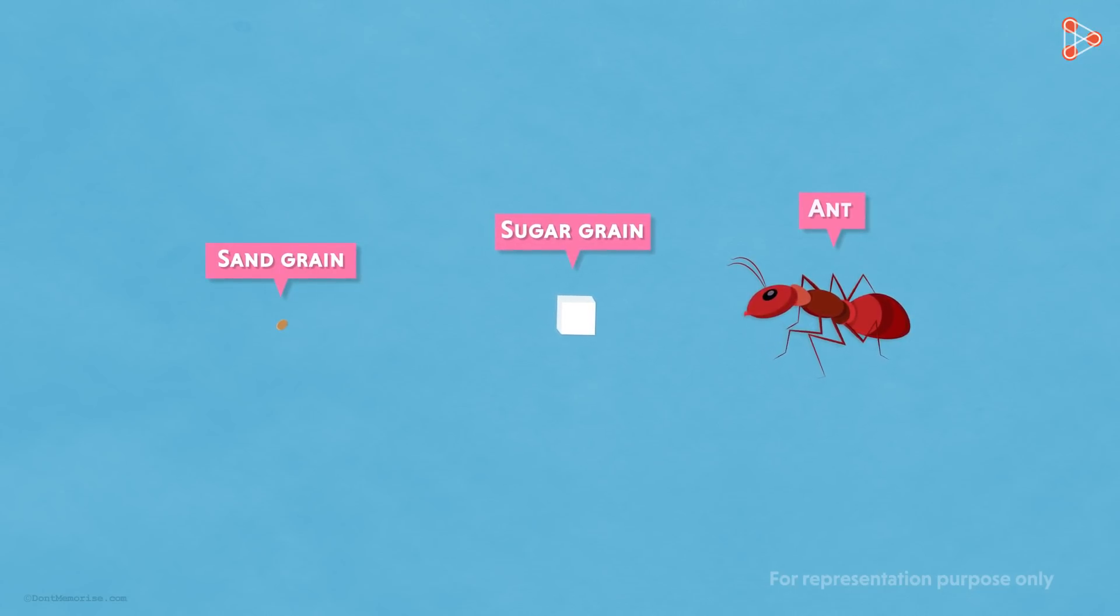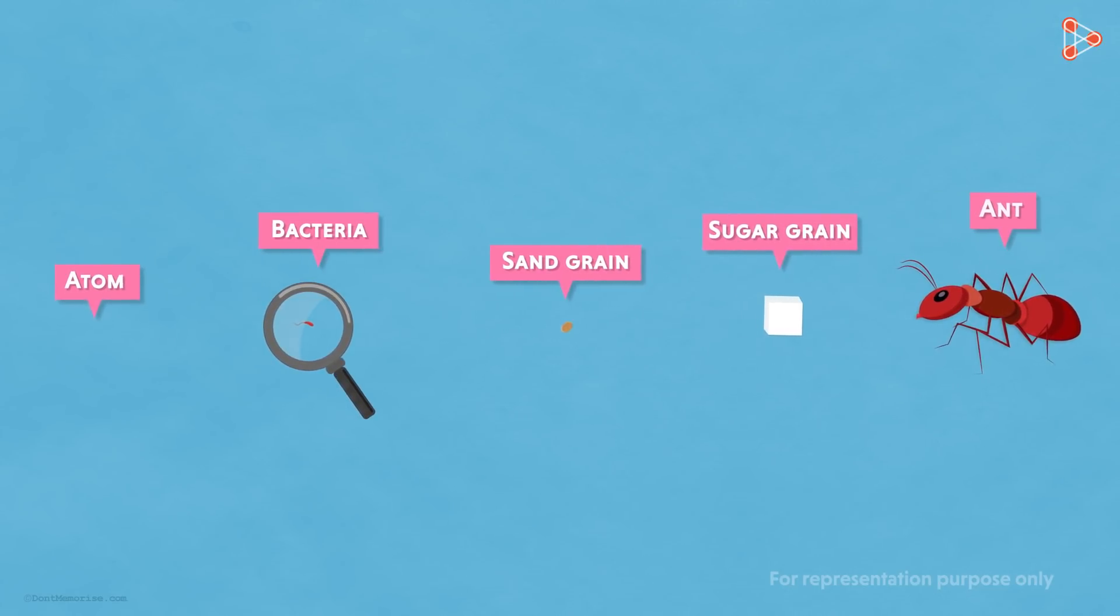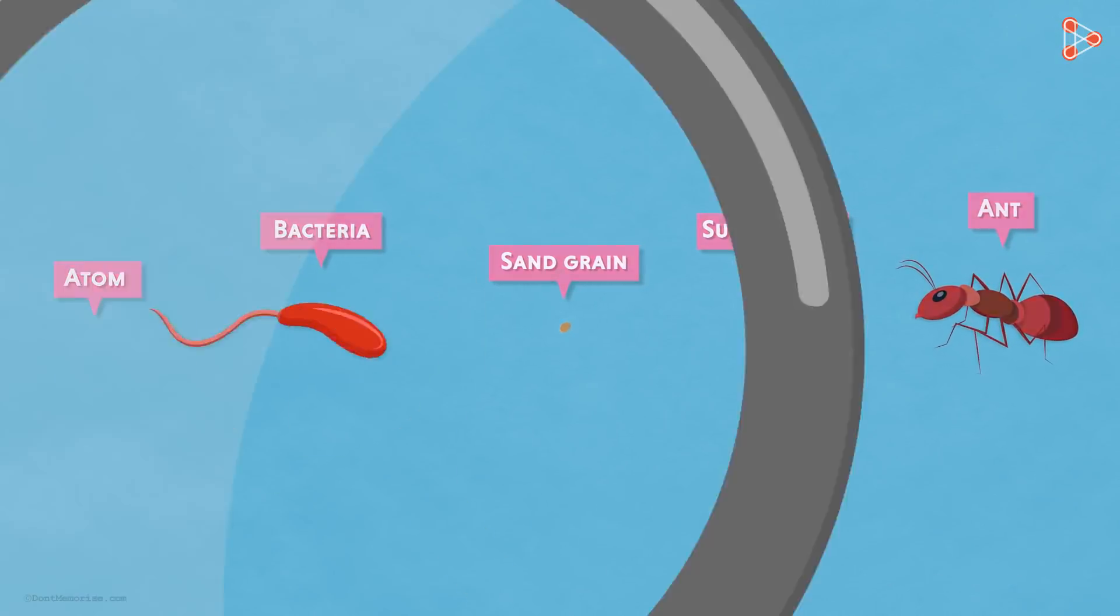Yes, we know that microorganisms like bacteria are tinier than what we can imagine, because we cannot see them with our naked eyes. So is an atom as small as a bacterium? You will be amazed to know that a single cell like a bacterium is made up of millions of atoms. Astonishing, right?